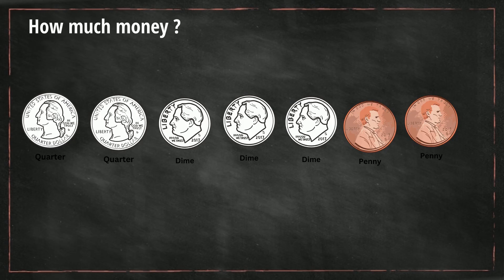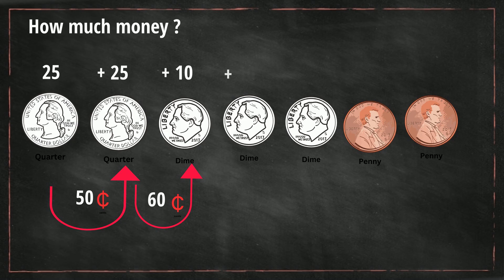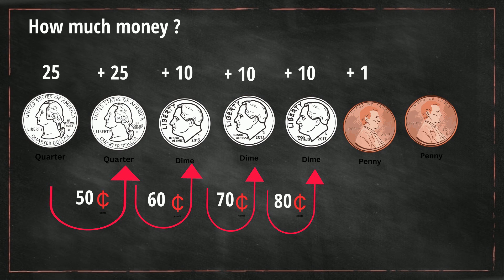We have a quarter plus a quarter which is 25 plus 25, so that's 50. Then let's add a dime which is 10, so that's 60. Add another dime which is 10, that's 70. Add another dime which is 10, we're up to 80. Now we have 1 cent which is a penny, so we have 81. And then another penny which is 82 cents.